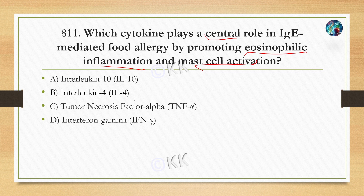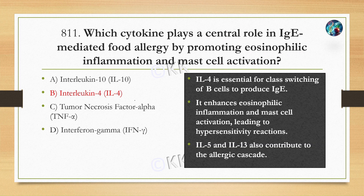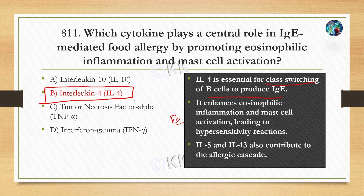The correct option is Option B, Interleukin-4. IL-4 is essential for class switching of B cells to produce IgE. Interleukin-4 basically enhances eosinophilic inflammation and mast cell activation, which leads to hypersensitivity reaction. Interleukin-5 and Interleukin-13 also contribute to this process.